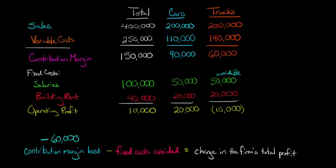Let's say that building rent is $40,000. It's a long-term lease. We can't get out of that. Even if we get rid of this truck division, this $20,000 doesn't go away. It stays. So basically this is not avoidable. The only fixed cost that is avoidable is this $50,000.